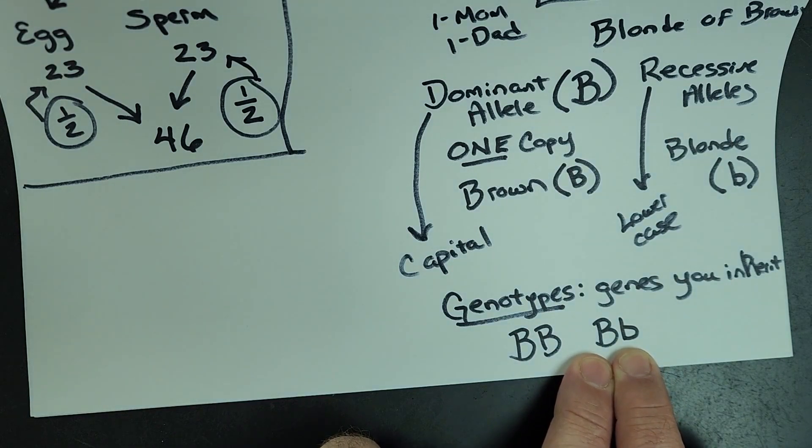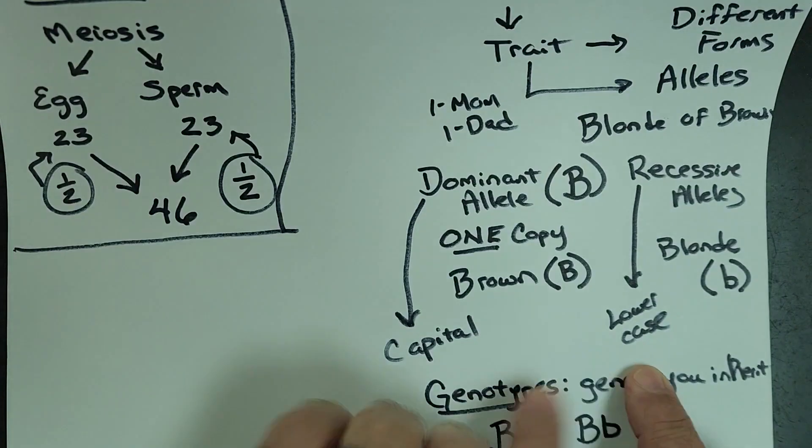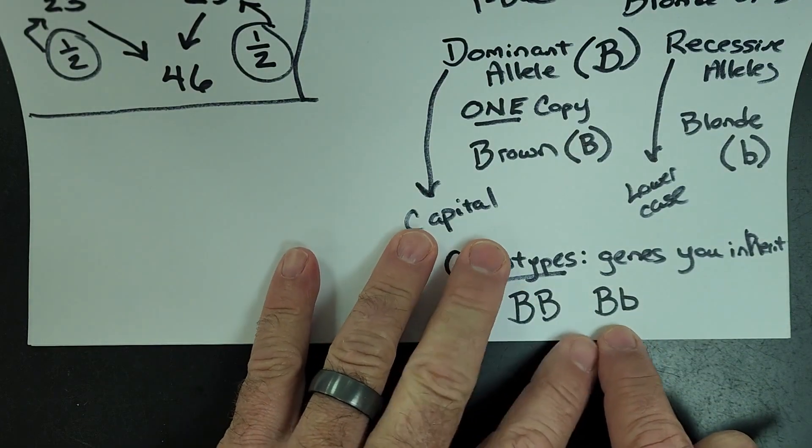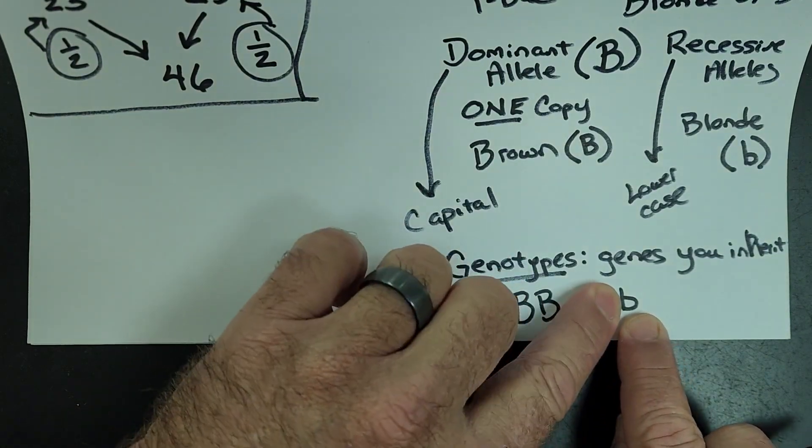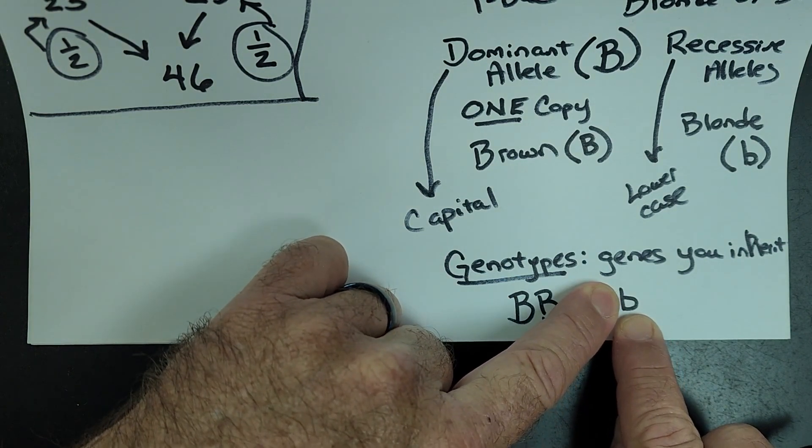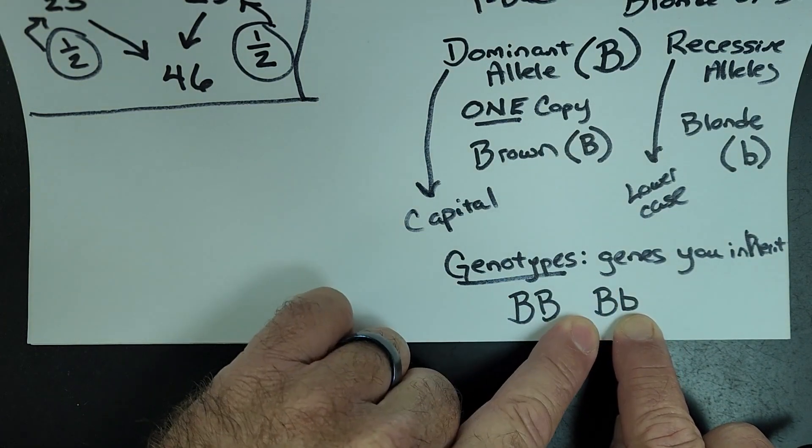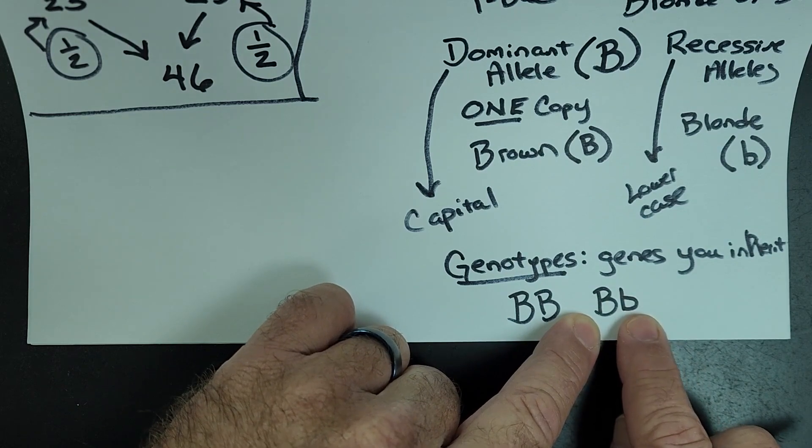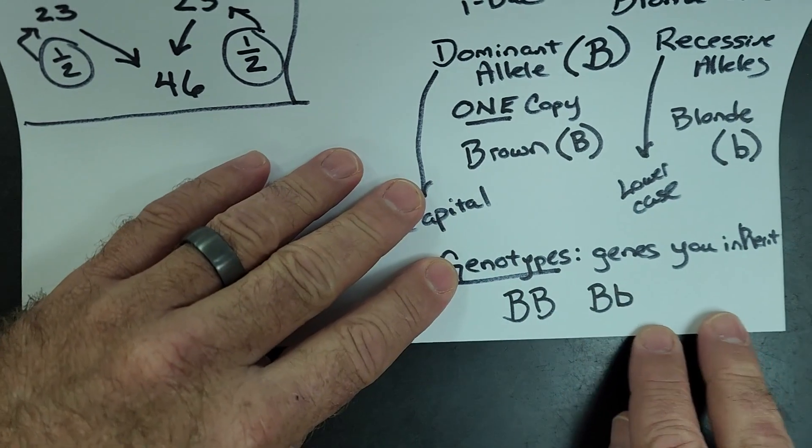Dominant genes can cover up recessive genes. This person though does have the ability to pass that gene on to any future children they might have, but they themselves will never have that color hair unless they artificially change their hair color.